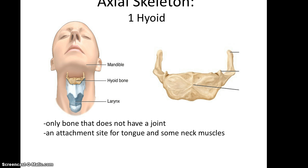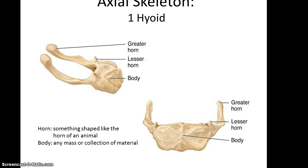One very fascinating bone is the hyoid bone, found in the throat. It is the only bone that does not have a joint — the only bone that does not articulate with another bone. Instead, it is an attachment site for the tongue and muscles of the neck. If you look at it, you see that it has a body, a lesser horn, and a greater horn.